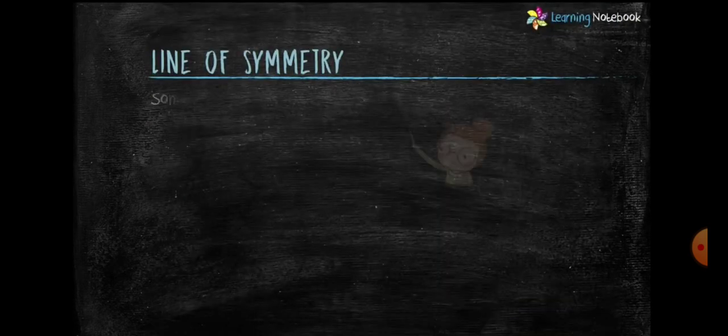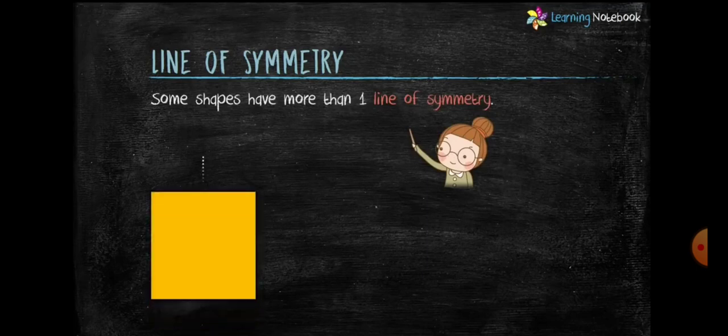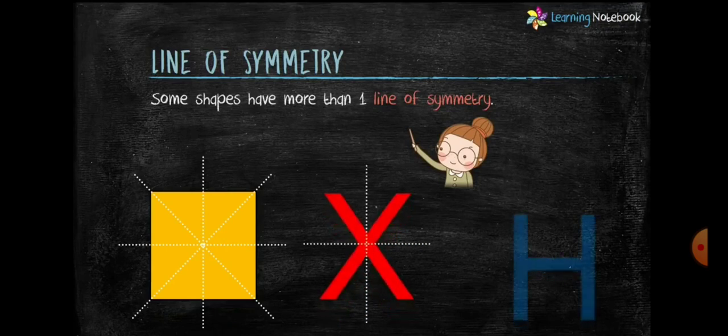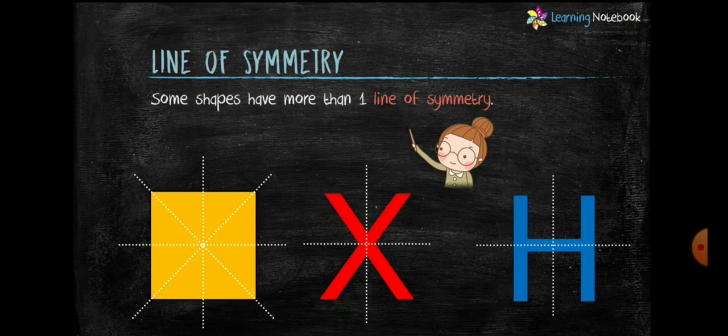Some shapes have more than one line of symmetry. For example, a square has four lines of symmetry, whereas letter X and letter H have two lines of symmetry.